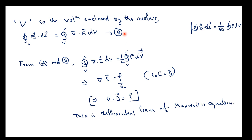Comparing equation (a): ∫E·ds = (1/ε₀)∫ρ dV, and equation (b): ∫E·ds = ∫(∇·E) dV, since both equal ∫E·ds, we get ∫(∇·E) dV = (1/ε₀)∫ρ dV. Since the dV terms cancel, this gives ∇·E = ρ/ε₀.